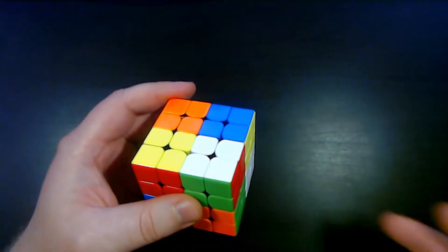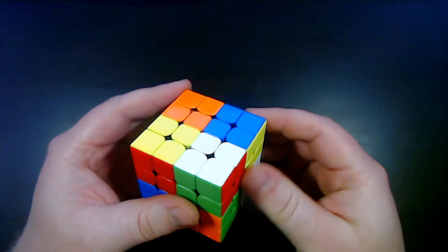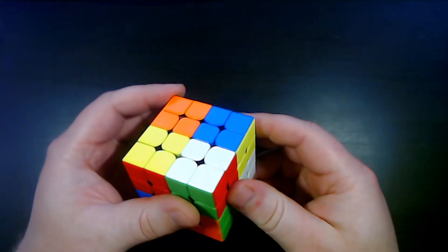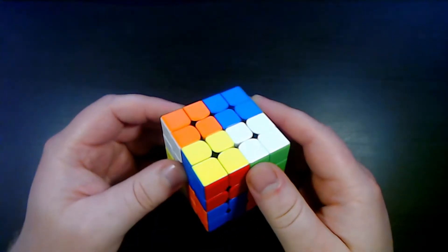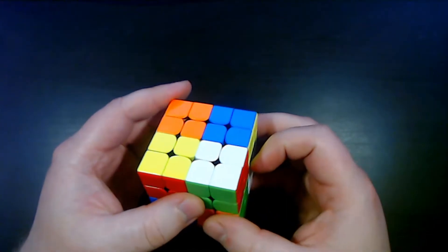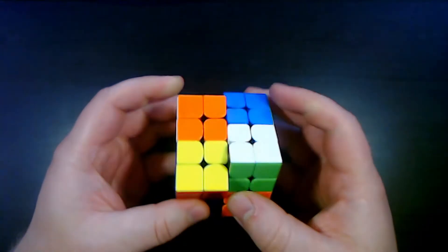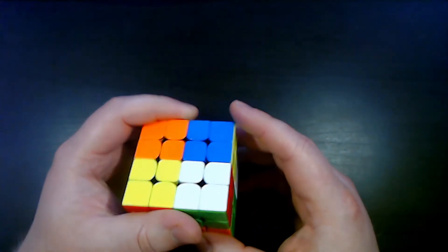The method itself is called 2CEP and it's a 2x2 reduction method. 2CEP stands for 2x2 corner edge pairing method. I first started working on 2CEP after challenging myself to solve my 4x4 by reducing it to a 2x2 for fun.